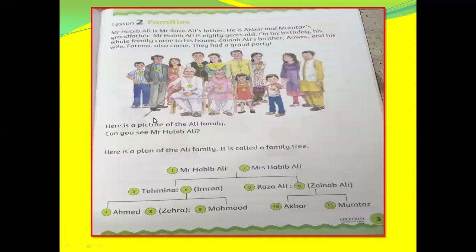Now read with me, then I will explain. Mr. Habib Ali is Mr. Raza Ali's father. He is Akbar and Mumtaz's grandfather. Mr. Habib Ali is 80 years old. On his birthday, his whole family came to his house. Zainab Ali's brother Anwar and his wife Fatima also came. They had a grand party.